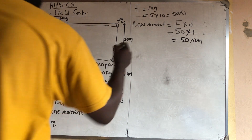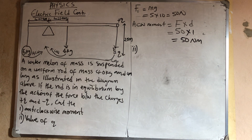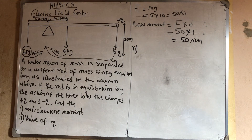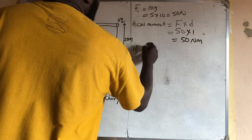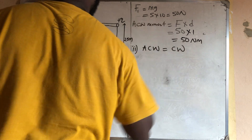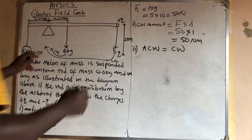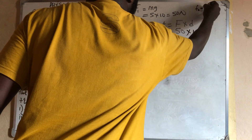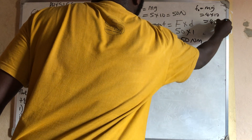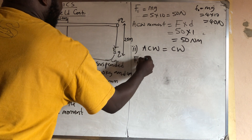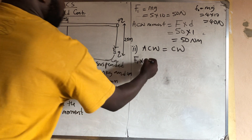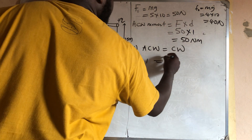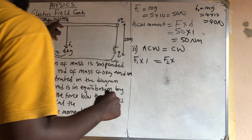So that is the anti-clockwise moment. For the second part, we need to calculate the charge. To do this we need the force of attraction between the two charges. We use the principle: anti-clockwise moment equals clockwise moment. Let f1 be the watermelon force and f2 be the rod's weight force. f2 = mg = 4 × 10 = 40 N. f1 times its distance from the knife edge (1 m) equals the clockwise moments.